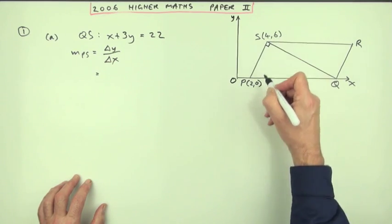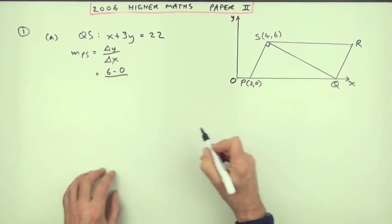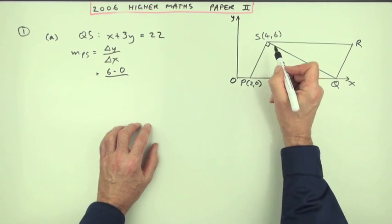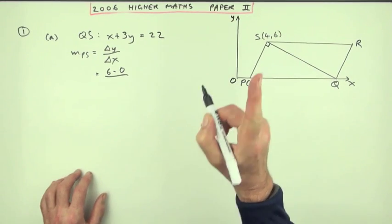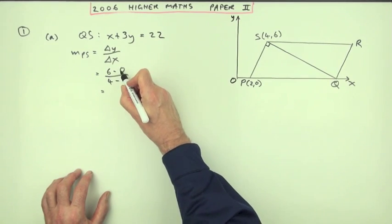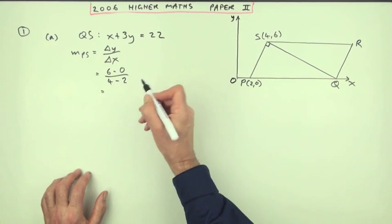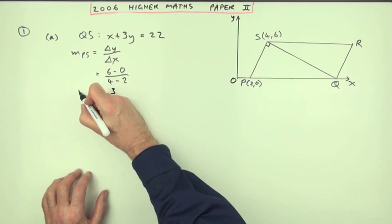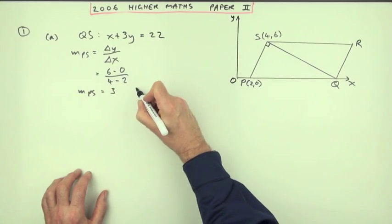Make sure you don't mix them up. Difference in the x's, the first coordinates, 4 take away 2 in the same order. We'll end up with a negative answer. So that's 6 over 2, which is 3. That's the first mark.